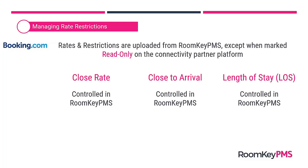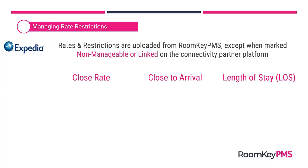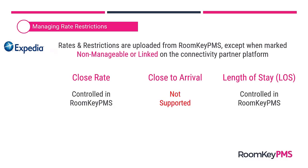For the Expedia Direct Connect — not Expedia rates managed through SiteMinder or another channel manager — when building Expedia rates on the Expedia platform, if you mark any as non-manageable or linked, they are managed on the platform directly. For all other scenarios, rates and restrictions are uploaded from Roomkey. However, Expedia does not support the close-to-arrival restriction — they only support the close rate and length-of-stay restrictions.